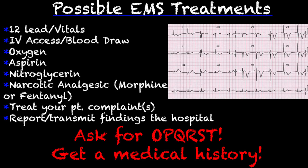Going into possible EMS treatments: patients experiencing an NSTEMI may call because of chest pain, nausea, or vomiting. If they have chest pain, follow chest pain protocol — get a 12-lead and vitals. Even if we can't interpret the 12-lead, treat it as cardiac chest pain unless there's trauma or another underlying cause. Gain IV access, obtain a blood draw, administer oxygen if necessary, aspirin, nitroglycerin, and consider a narcotic analgesic like morphine or fentanyl. Treat other complaints too — if the patient is nauseous or vomiting, consider an anti-emetic. Report and transmit all findings to the hospital, and transmit your EKG if able.